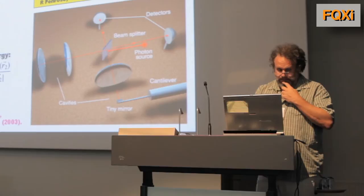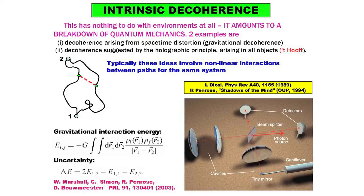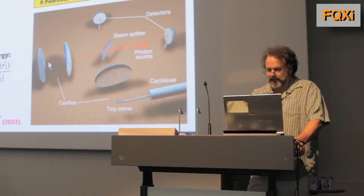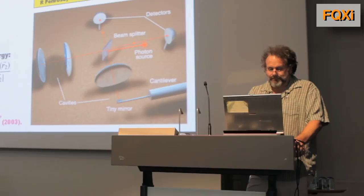I just want to talk about intrinsic decoherence. This is something that has been discussed by Penrose, by Diossi, and others. It says that there's some kind of decoherence in nature which is fundamental, which leads to a breakdown of quantum mechanics. It's important that we start discussing this not in the abstract realm of theory, but in the realm of experiments. And so this paper of Balmester, Penrose, et al. in 2003 was crucial, because this is a design for an experiment to see that.